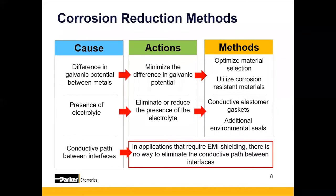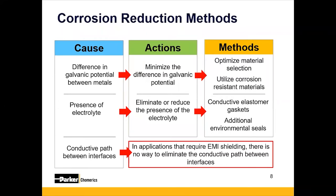For the presence of electrolyte — fluids, salt fog, humidity — you want to reduce and if possible eliminate the presence of an electrolyte. You can use a beryllium spring finger gasket, but that's not going to prevent water ingress or moisture intrusion. So you want to use a conductive elastomer gasket, and if possible, add an additional environmental seal. The tricky part is the conductive path between interfaces.